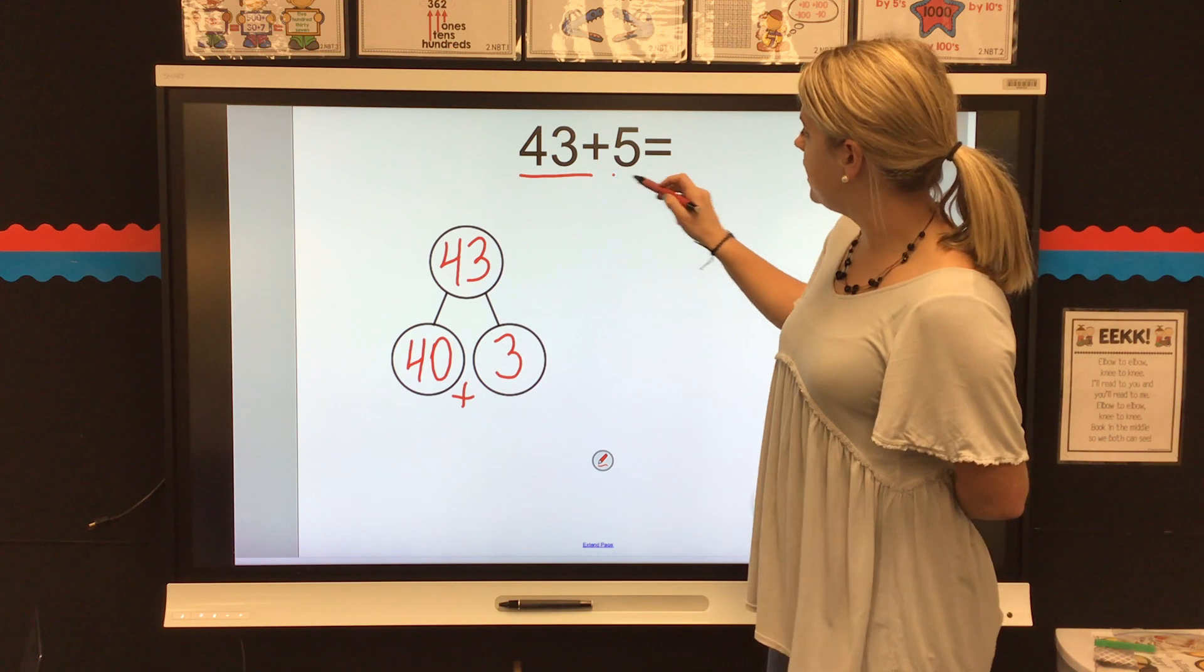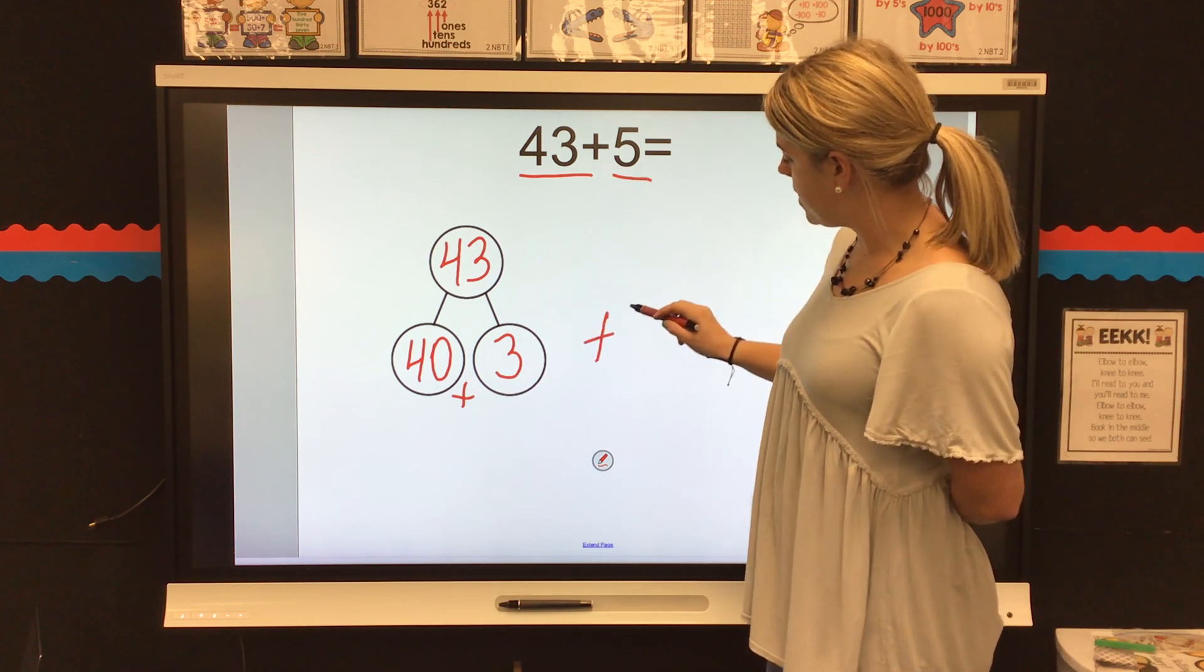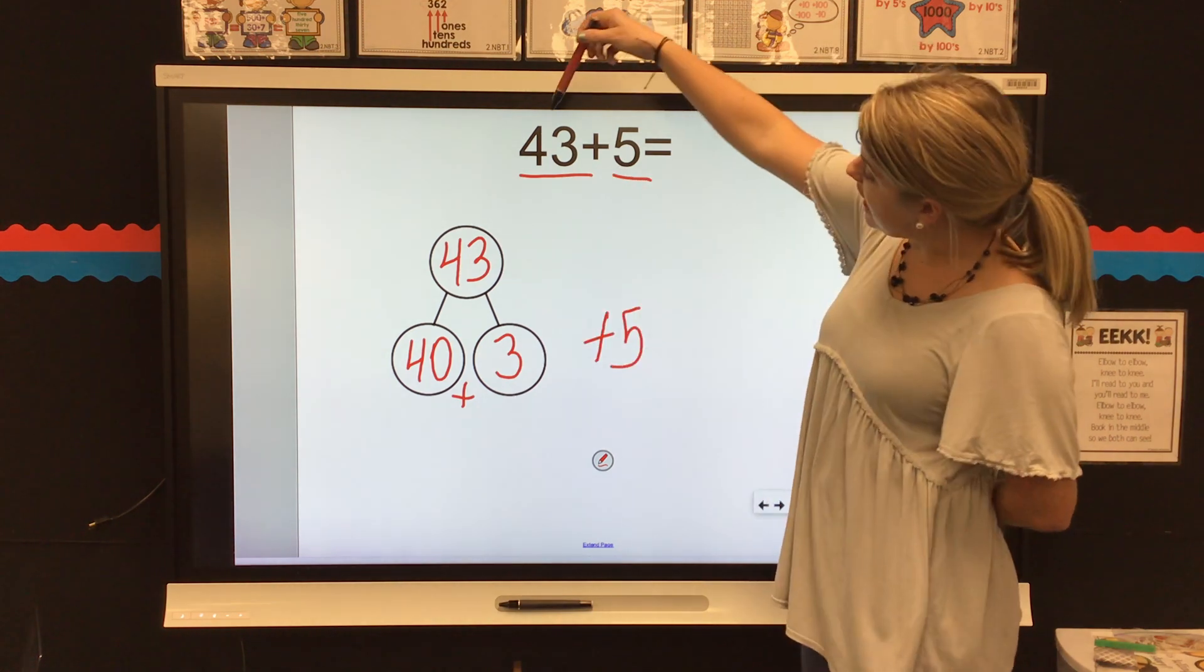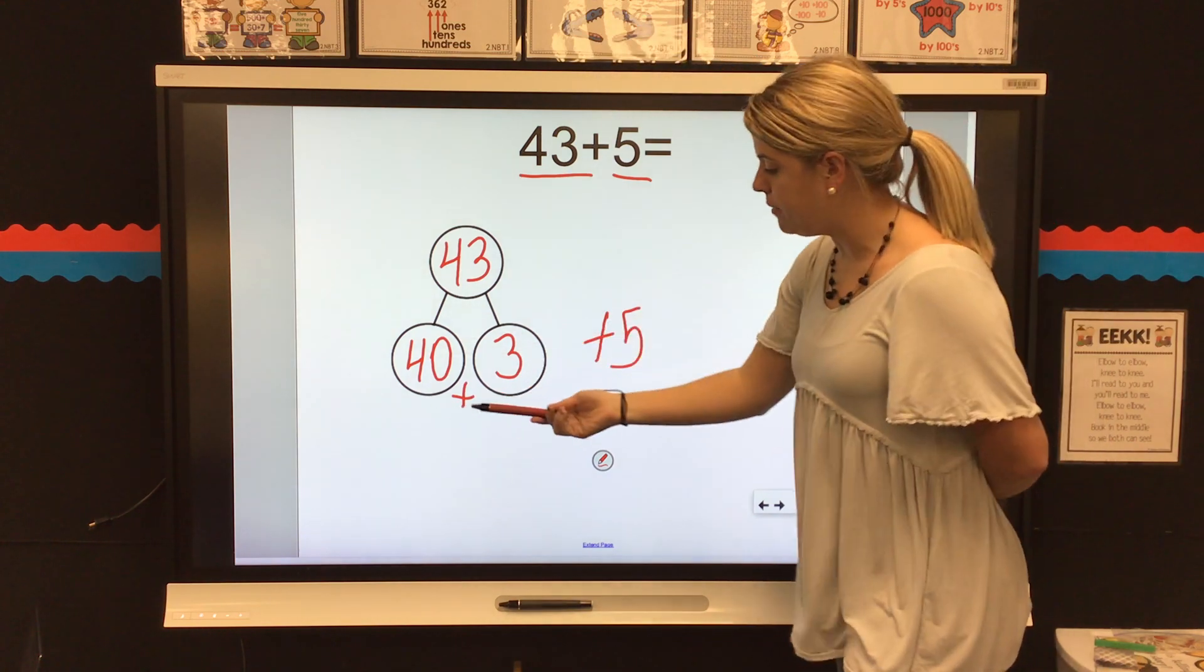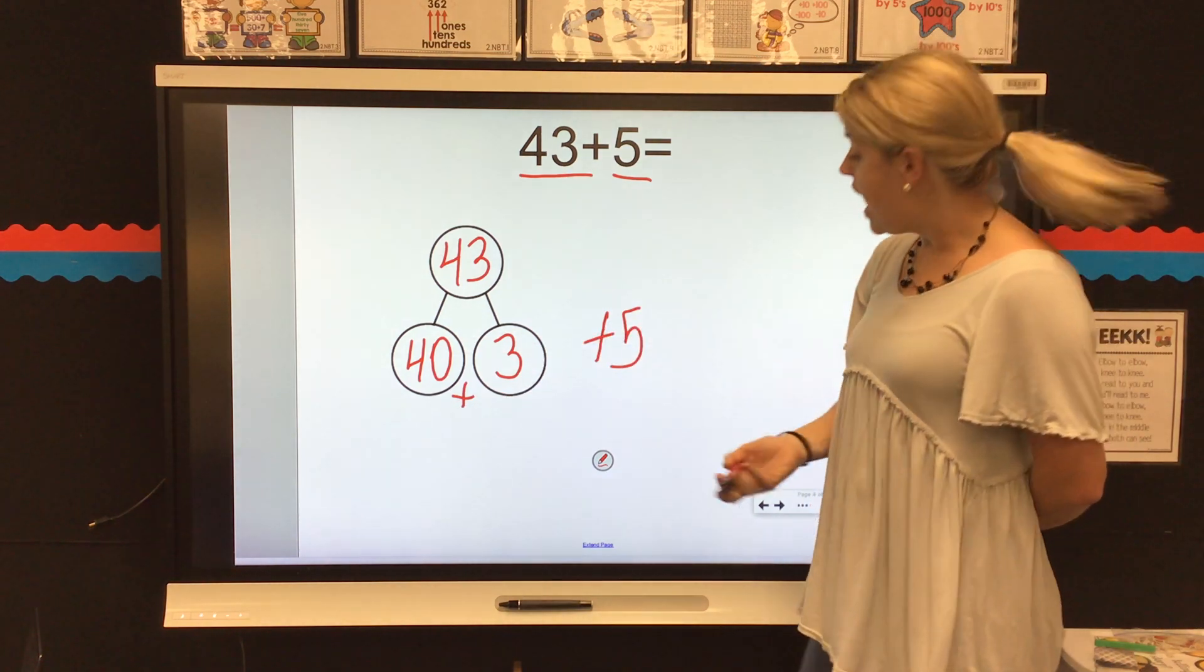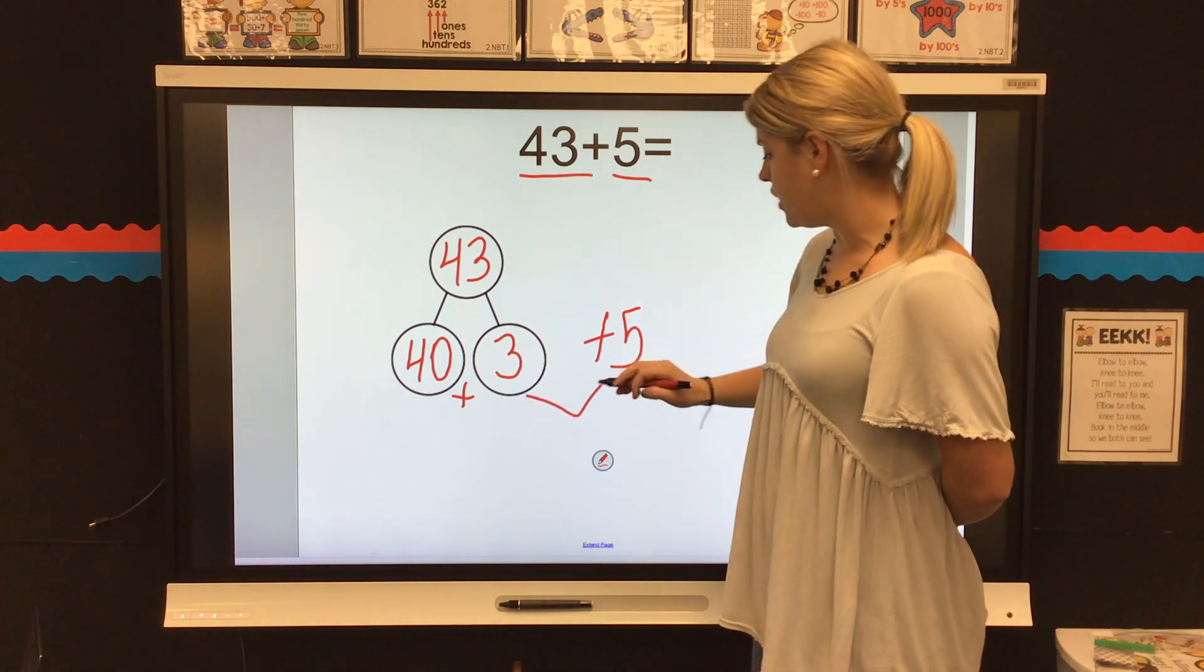So, 40 plus 3, and then I'm going to bring down my ones from up here. So, now, instead of 43 plus 5, I have 40 plus 3 plus 5. I'm going to start off by doing these two numbers.